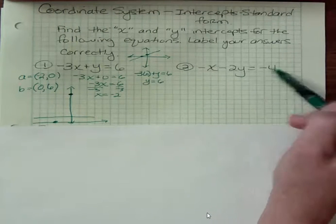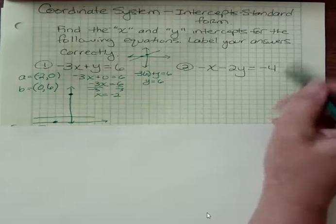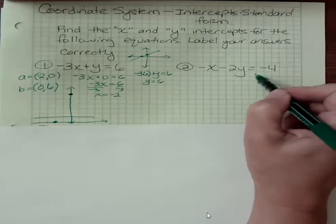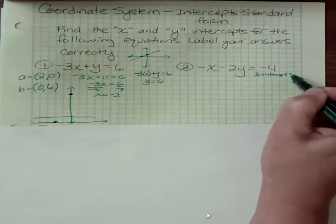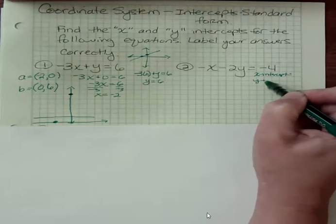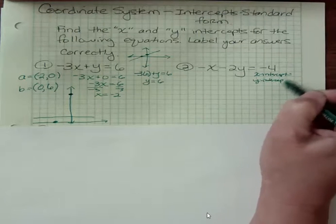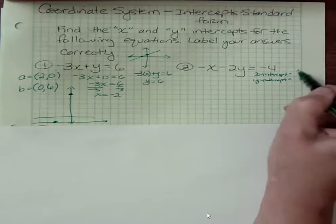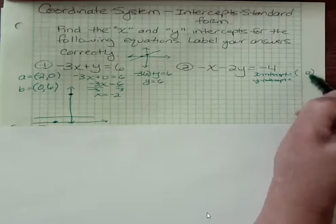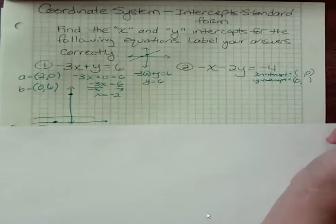Okay. What about finding the x and y intercepts here? One way I can label this is to actually say x intercept and y intercept. So this is another way to do that. If I want to find the x intercept, I need to make the y zero. And if I want to find the y intercept, I make the x zero.